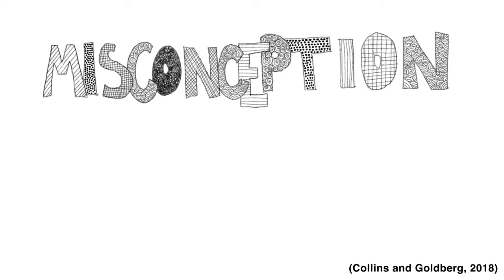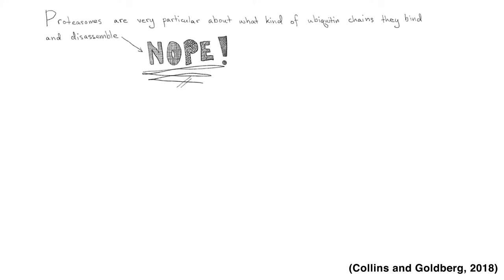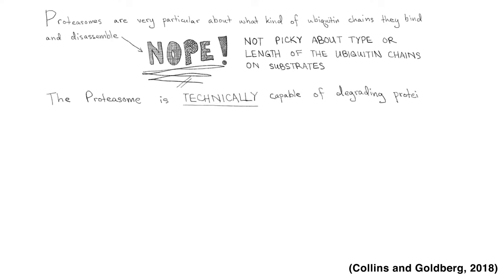One misconception about proteasomes is that they are very particular about what kind of ubiquitin chains they bind and disassemble. However, they are not picky about the type or length of the ubiquitin chains on substrates. It has been shown that the proteasome is technically capable of degrading proteins with short ubiquitin chains, even ones with only a single ubiquitin.